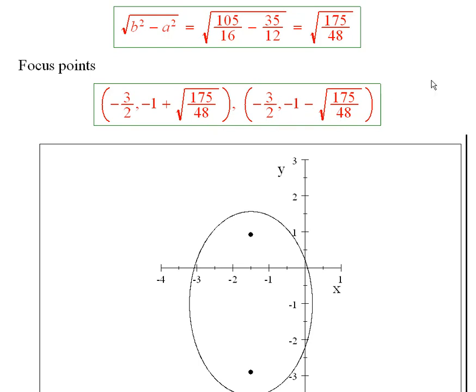Remember how you do that with the focus points: you take the q and you add to it the square root of b squared minus a squared, and you subtract from it the square root of b squared minus a squared.